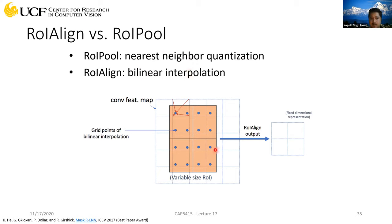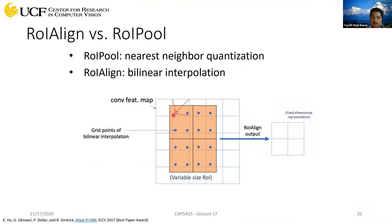The idea for ROI Align is instead of performing nearest neighbor quantization, we use bilinear interpolation. To do bilinear interpolation, instead of mapping the proposal back to the activation map to perform quantization, we try to discretize the proposal itself. We create a grid map inside this proposal. Instead of directly using activation values from the feature map, we estimate — if we are at this location, what value should it have. It will be a bilinear interpolation of all neighboring pixel values.